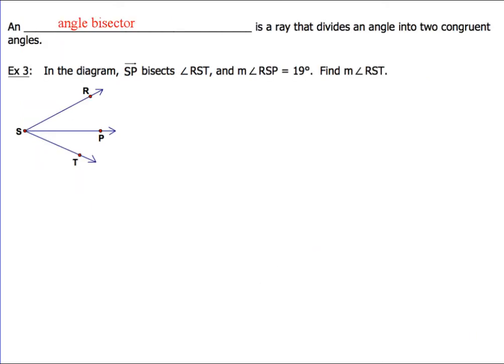Now, the last piece for this small video is talking about the angle bisector. An angle bisector is a ray that divides an angle into two congruent angles. That's just what it sounds like, it'll take an angle and chop it in half. Let's take a look at our first example here, example number three. In the diagram, ray SP bisects angle RST, and the measure of angle RSP is 19 degrees. Find the measure of angle RST.